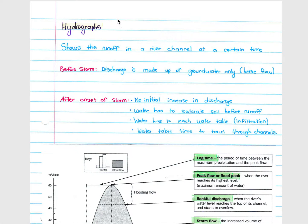In this lesson we will look at hydrographs and fluvial landforms, which form part of the geography syllabus. A hydrograph is simply a graph which shows the runoff in a river channel at a certain time, normally after a period of rainfall or before a period of rainfall.